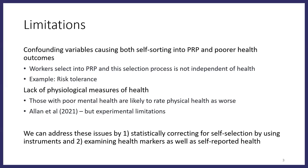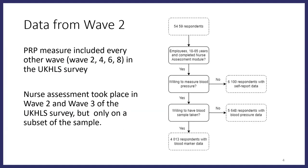In the current paper, we wanted to address these issues by statistically correcting for self-selection using instruments, and by looking at biological health markers as well as self-reported health to get a fuller picture. We use data from wave two of the UK HLS. What's really good about the UK HLS is that it includes a PRP item, and in wave two they also include a nurse assessment with biological health data. This allowed us to use wave two as it included both the PRP measure and the nurse assessment, although only on a subset of the sample.